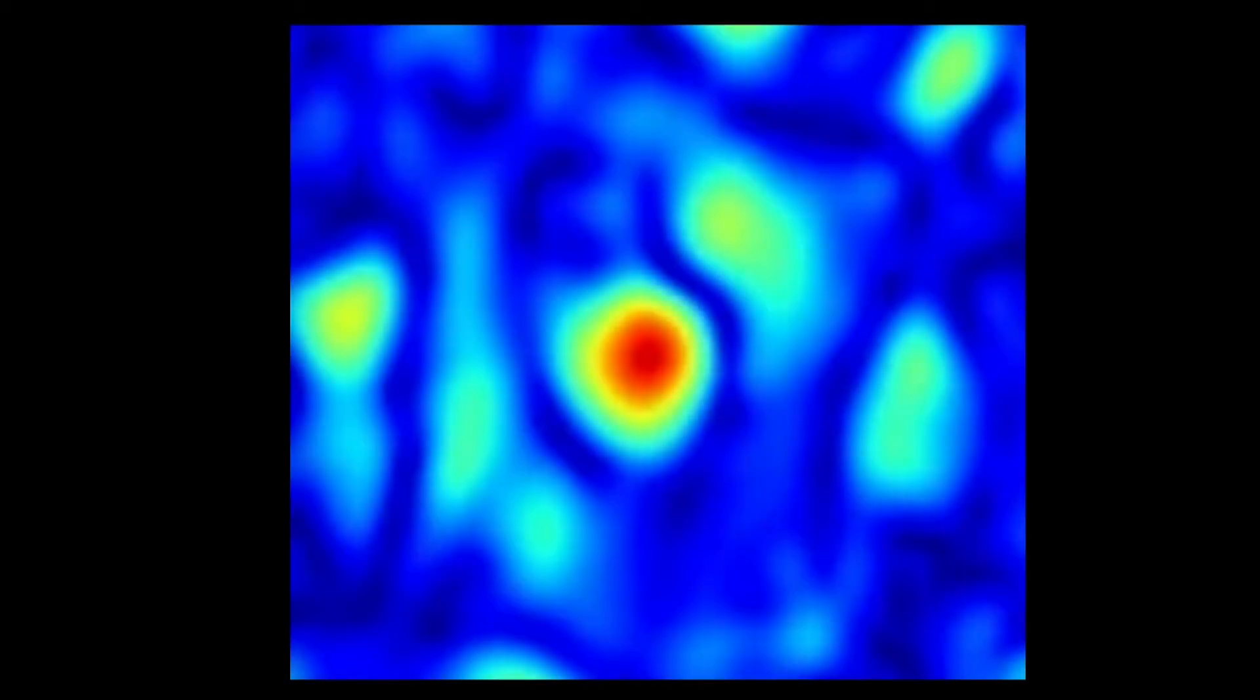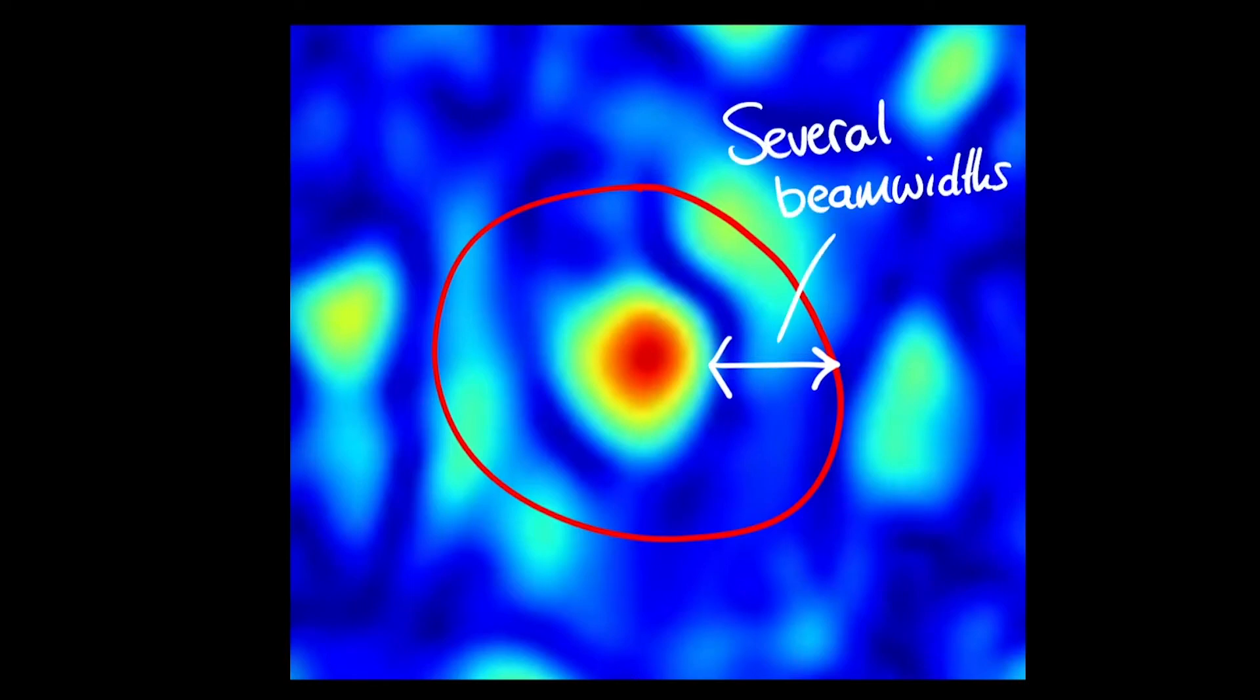In general, the best practice for clean masking is to create a relatively generous mask that includes the emission region, with buffers several beams wide between the edge of the mask and the emission region.